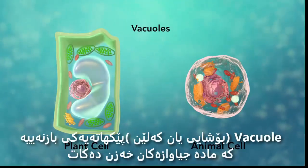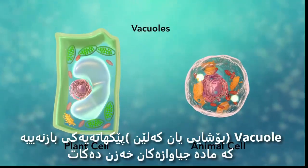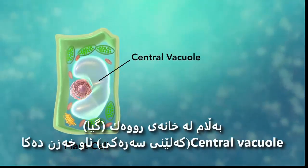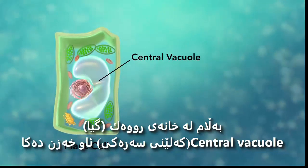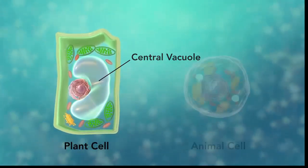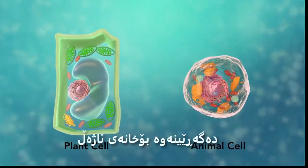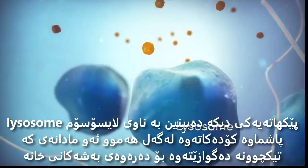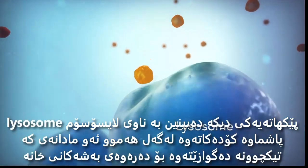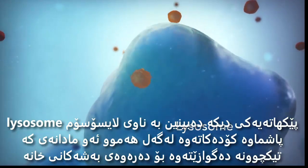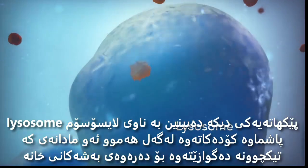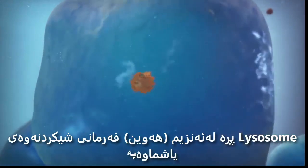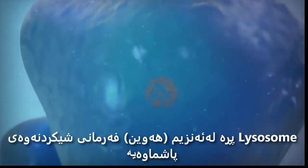Vacuoles are sac-like structures that store different materials. Here in this plant cell, the central vacuole stores water. Going back to the animal cell, you will see an organelle called a lysosome. Lysosomes are the garbage collectors that take in damaged or worn-out cell parts. They are filled with enzymes that break down this cellular debris.